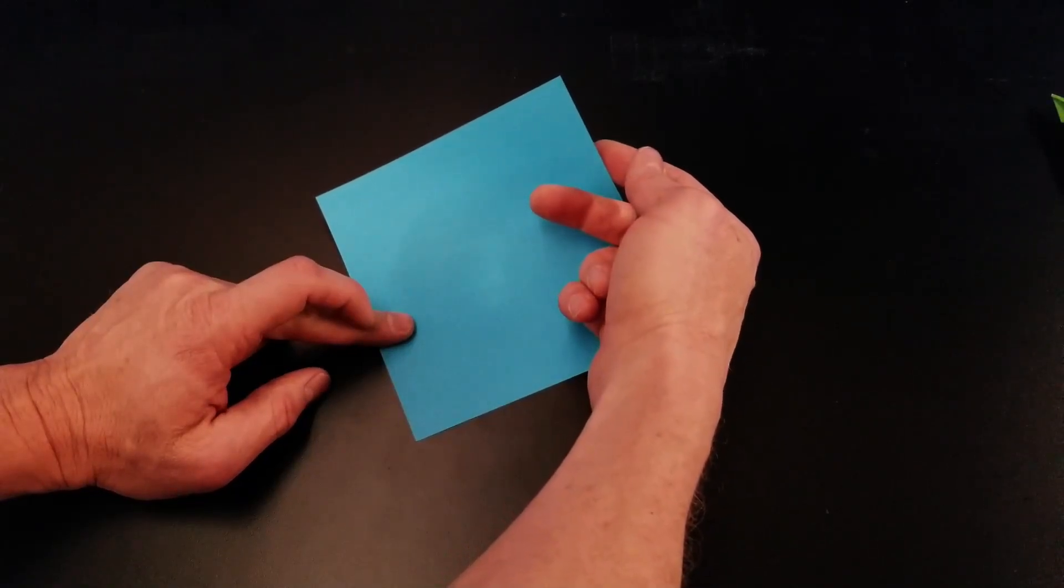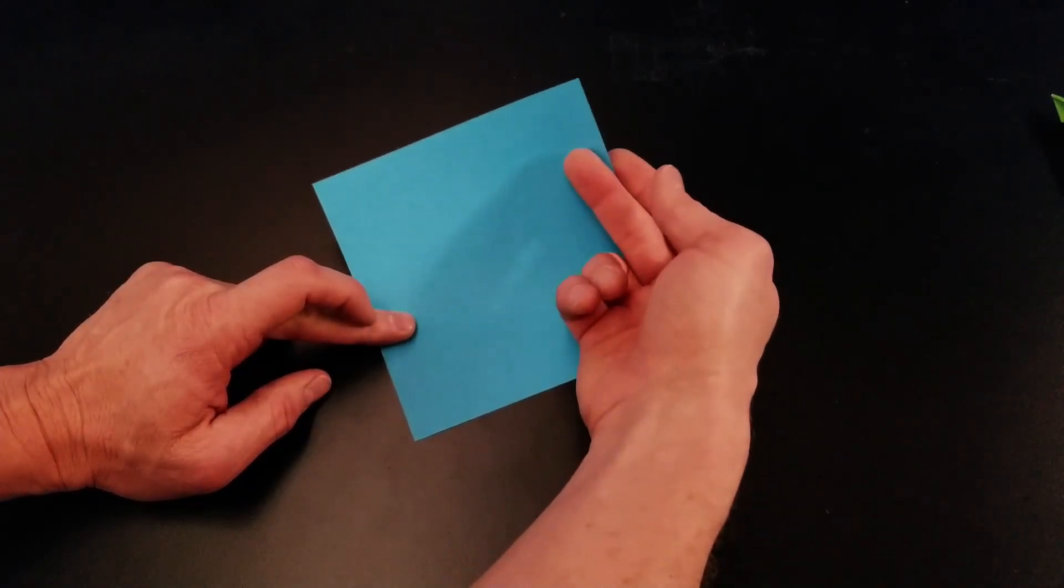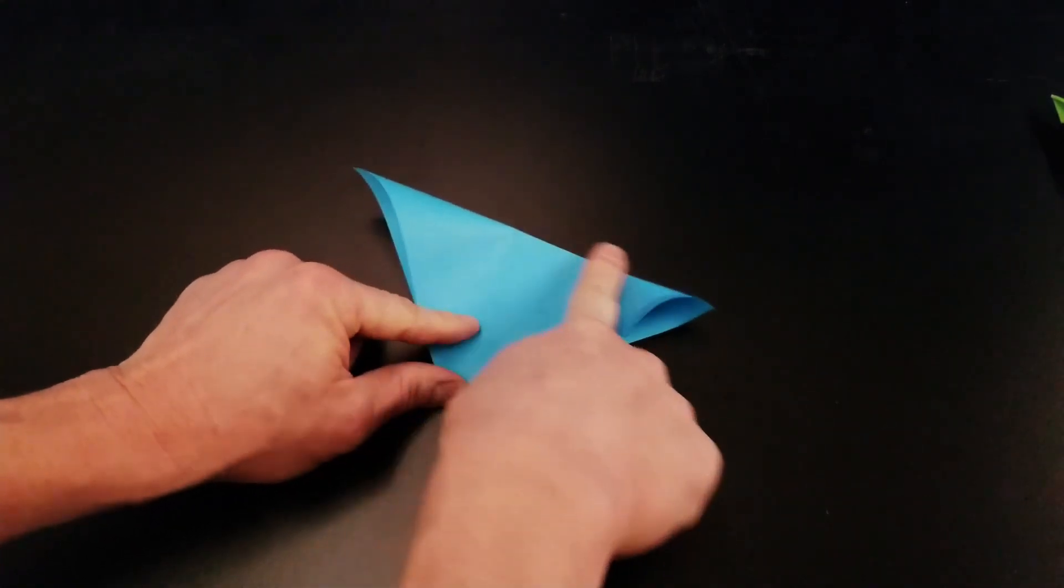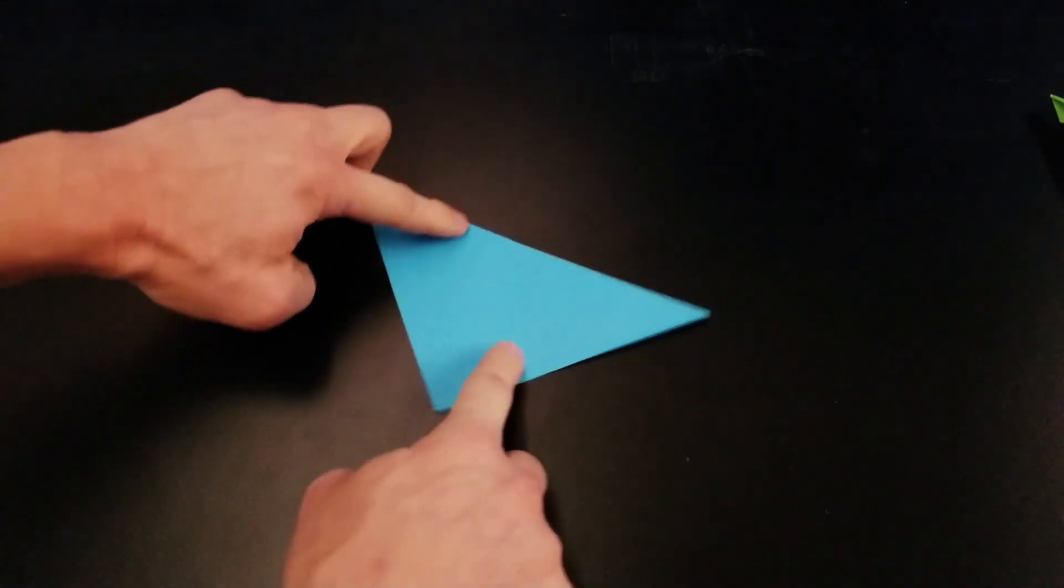We're going to fold this in half, catty corner. So I'm going to line up these corners, crease that down and rotate it.